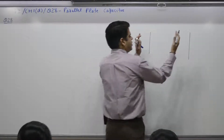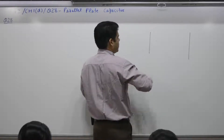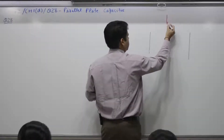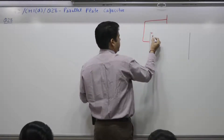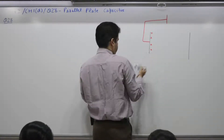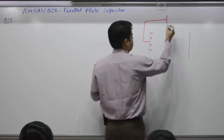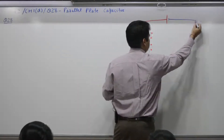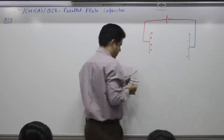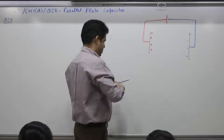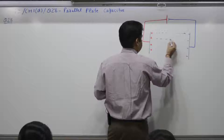You take two plates that are parallel and apply a voltage across them using a battery. The positive terminal of the battery is connected with one plate and it will have positive charge. The other plate is connected to the negative terminal — low potential — and it will have negative charge. Electric field lines start from positive and end at negative.